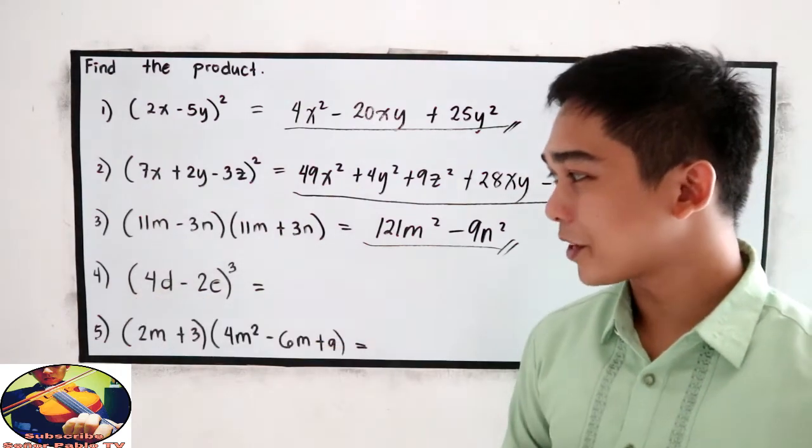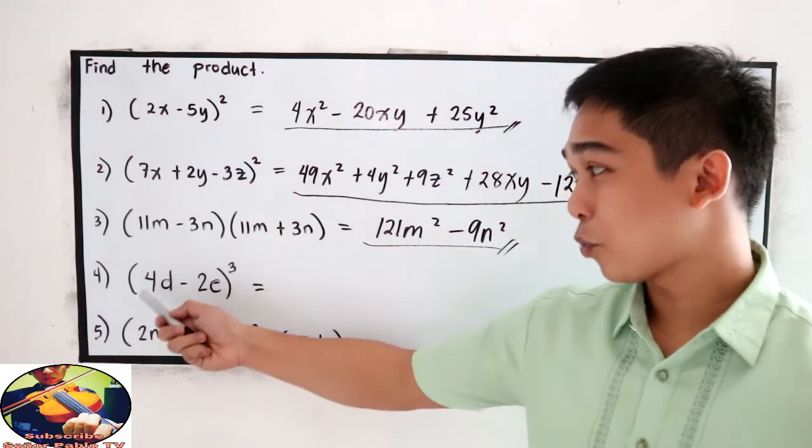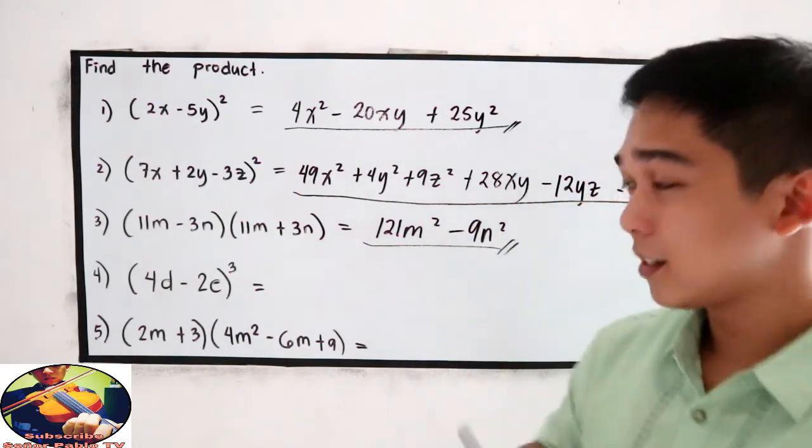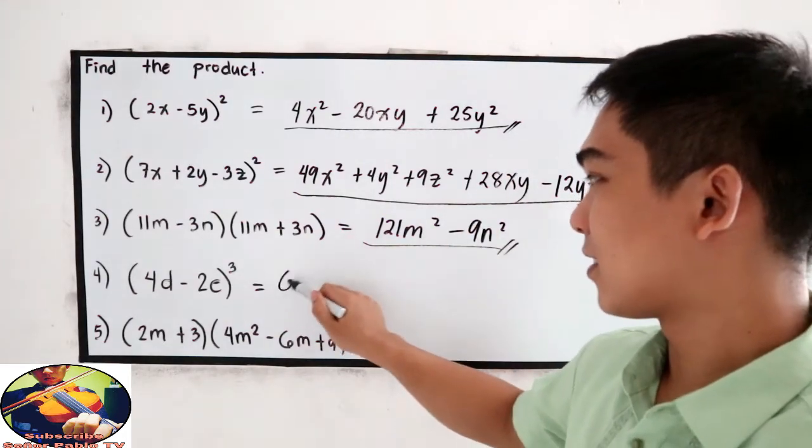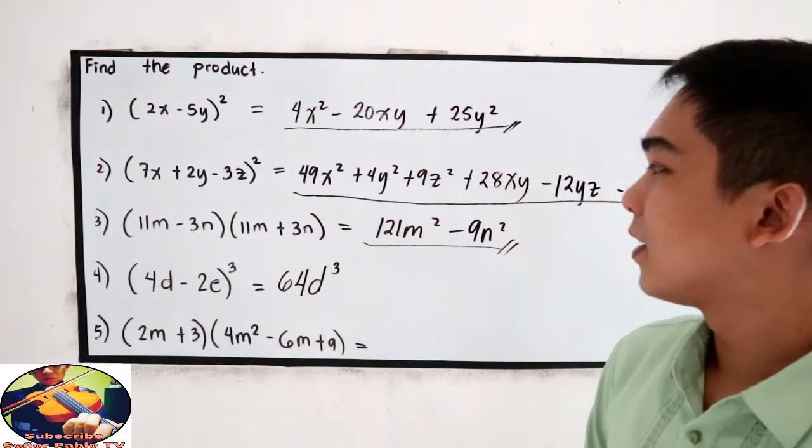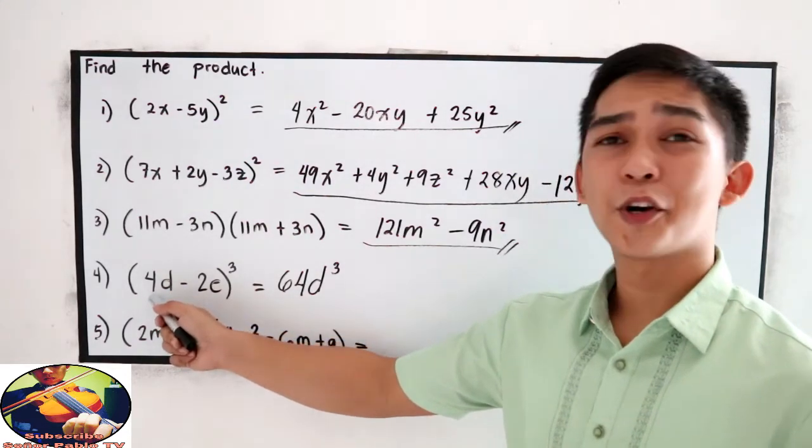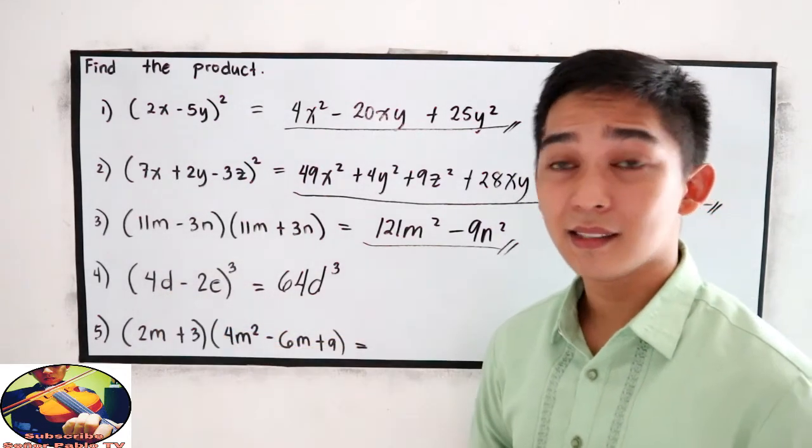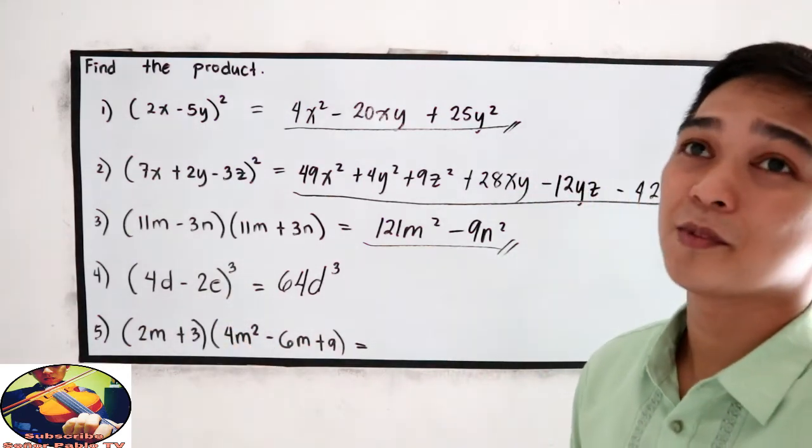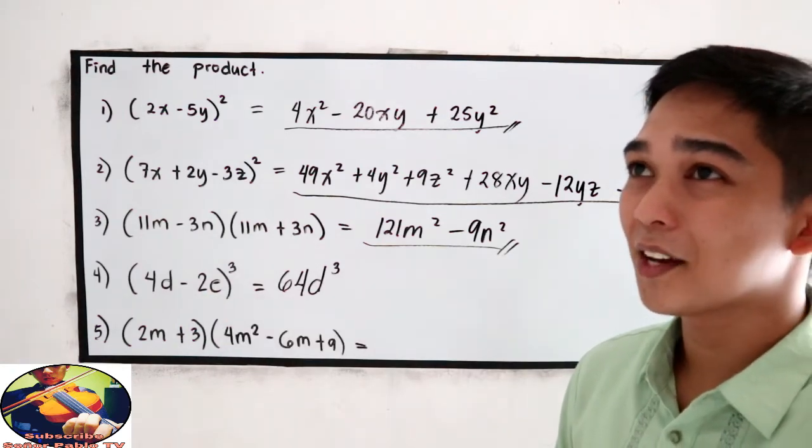And for number 4. Cube of a binomial. Square the first term. Ah, cube the first term, sorry. 4 times 4 times 4. That is 64d cubed. Now, square the first term. That is 4 times 4. 16 times the second term. 16 times 2. That is negative 32.